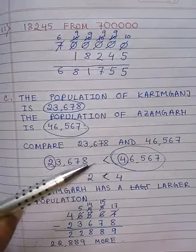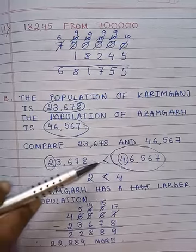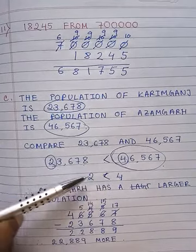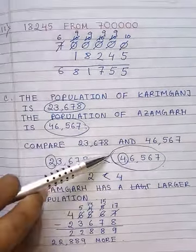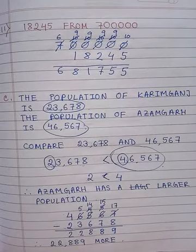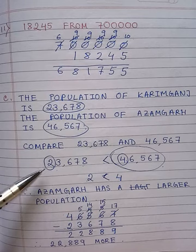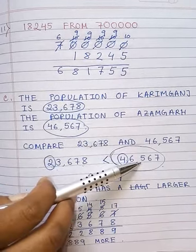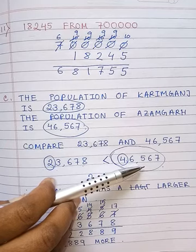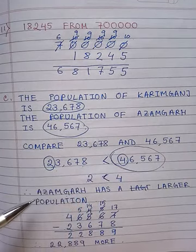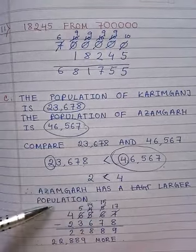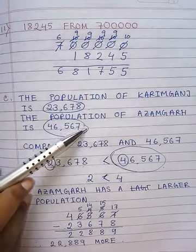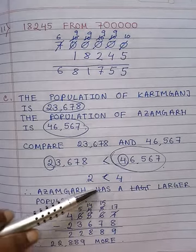How to compare these two numbers? First take the first digit — this is 2 and this is 4. Between 2 and 4, 2 is less than 4. 2 belongs to the first number, so 23,678 is the smaller number. 23,678 is smaller and 46,567 is greater. So Azamgarh has a larger population, because the population of Azamgarh is 46,567, which is the larger number.